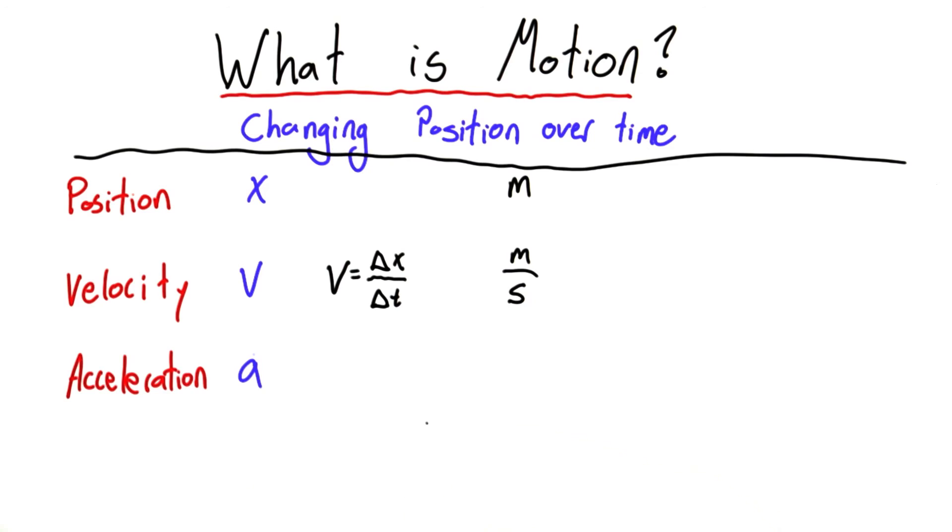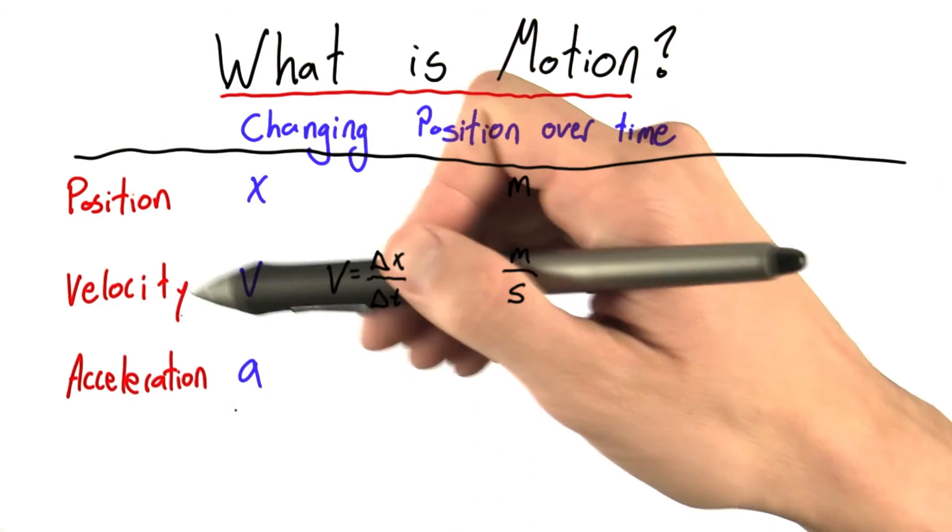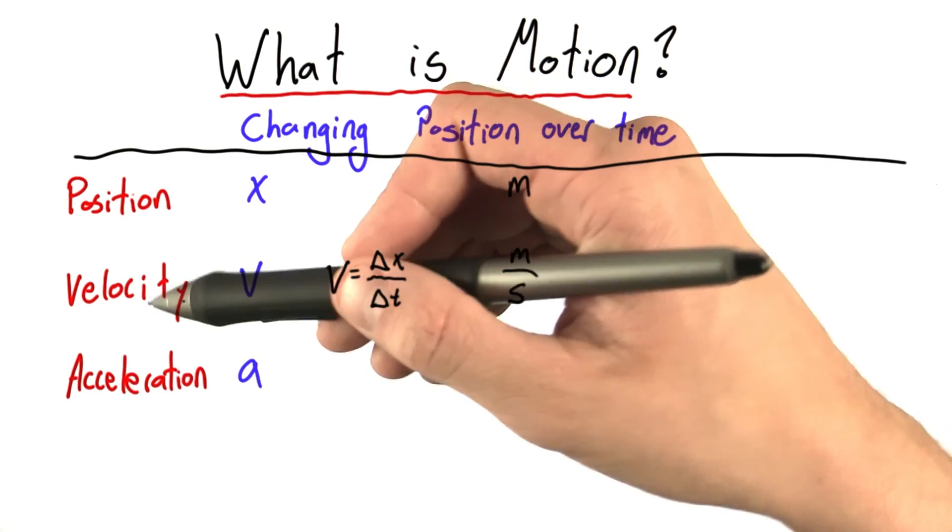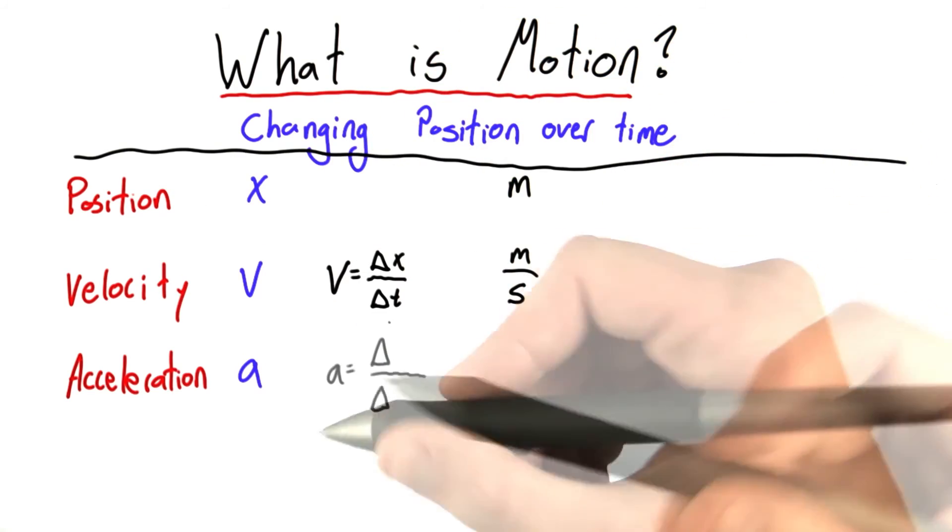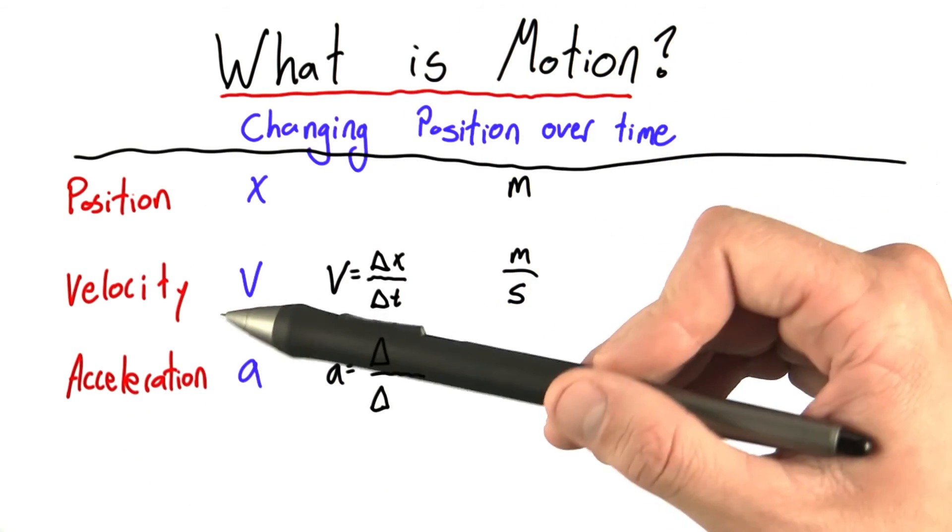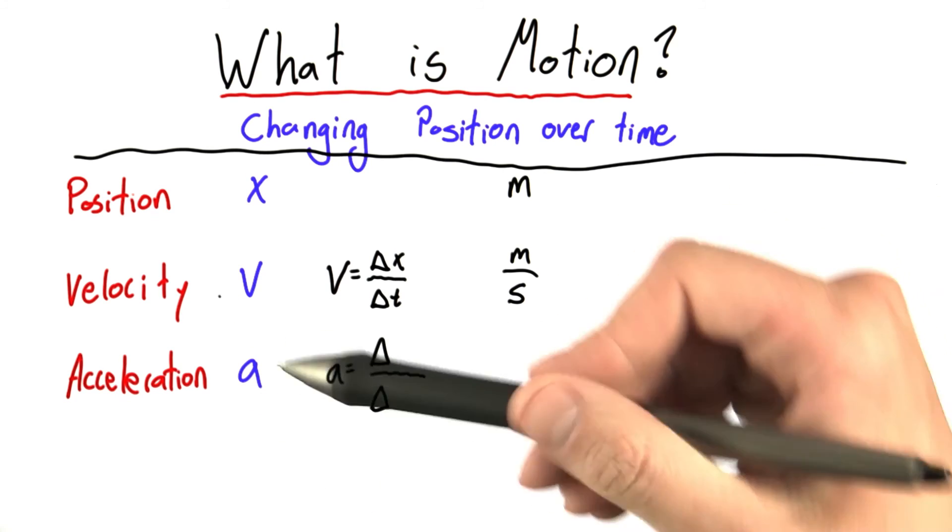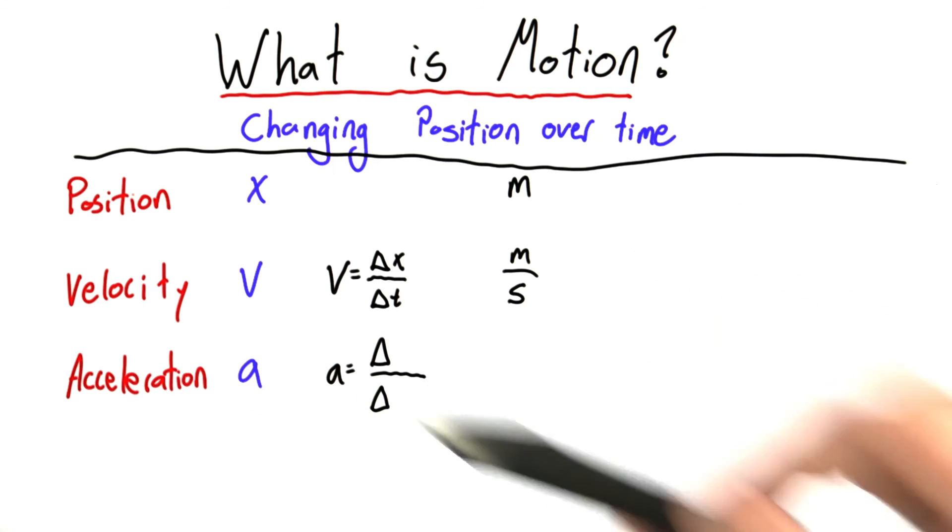Acceleration is a measure of how an object's velocity changes with time, just as velocity measured an object's positional change with time. Using this idea that acceleration is change in velocity, can you complete this equation which defines acceleration?